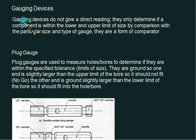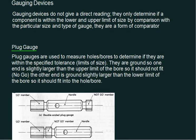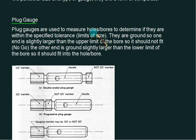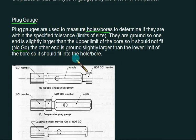In this video we are going to cover the design of GO and NO GO gauges. Gauging devices are of two types: plug gauge and ring gauge. The plug gauge is normally used to measure holes or bores, to determine if they are within the specific tolerance limit. We are not actually measuring — we are just checking whether the hole is the same size, undersize, or oversize. With the help of NO GO we can check oversize, and with GO we can check for undersize.